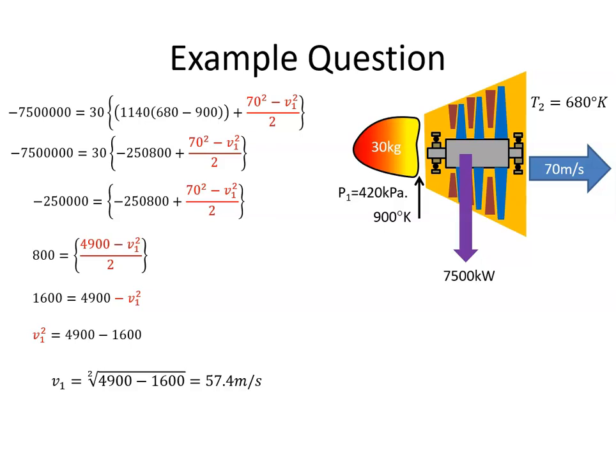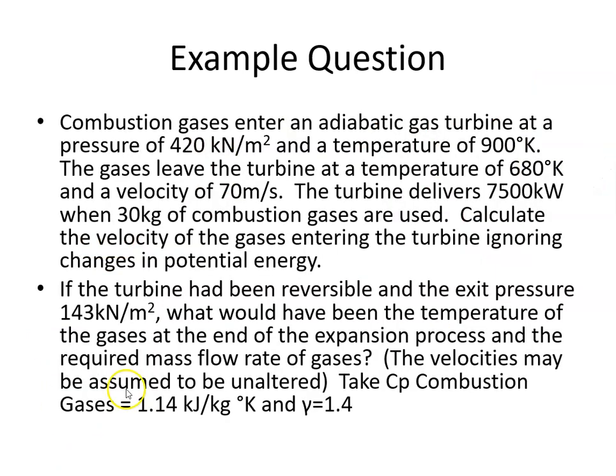The second part was, let me just go back and have a look at that. If the turbine had been reversible and the exit pressure was 143, what would be the temperature of the gases? I assume everything else is the same.